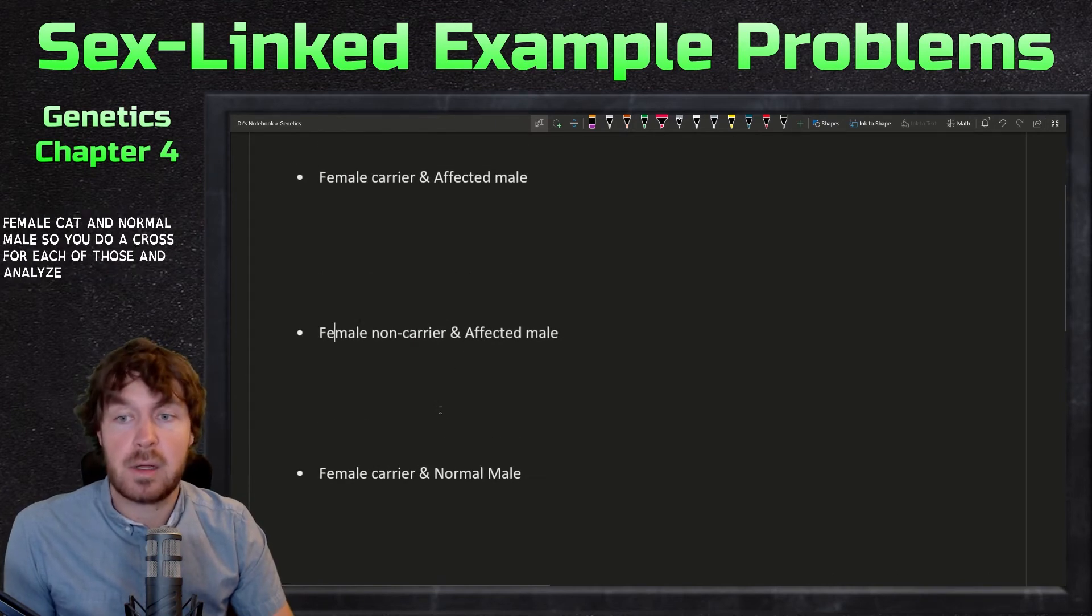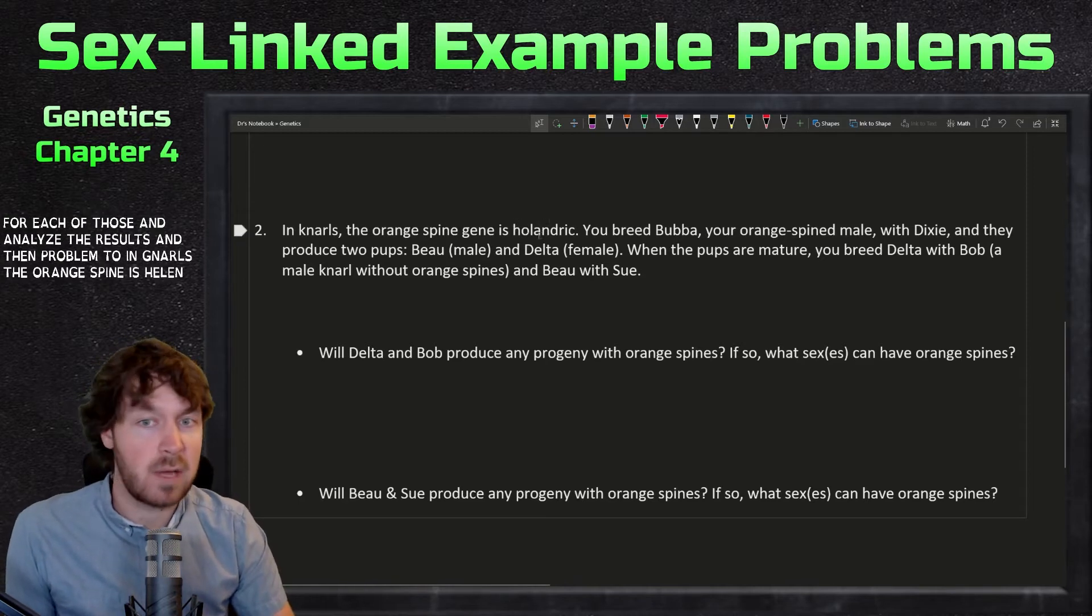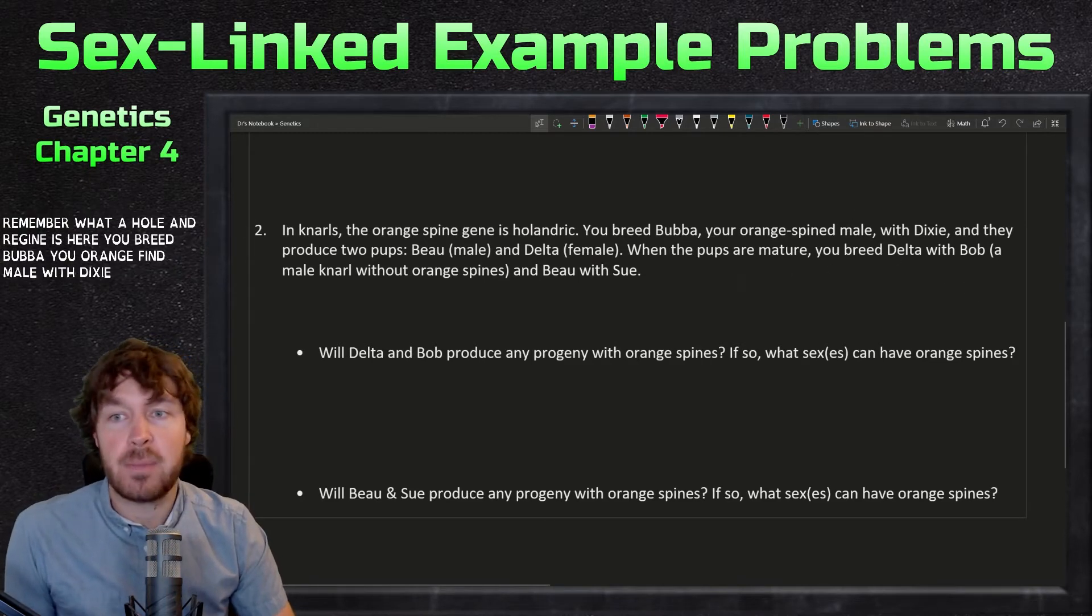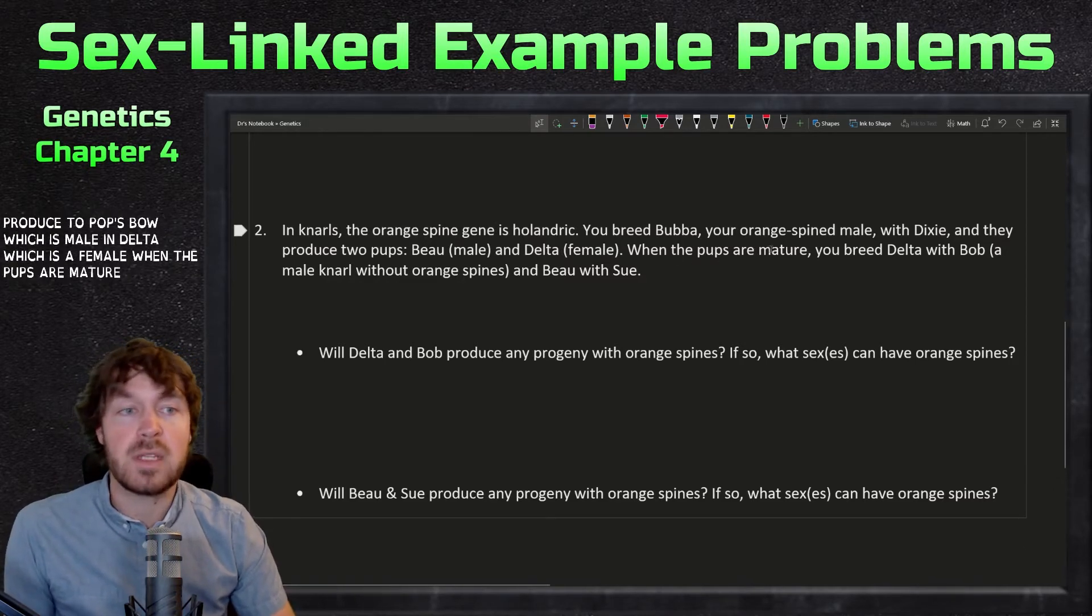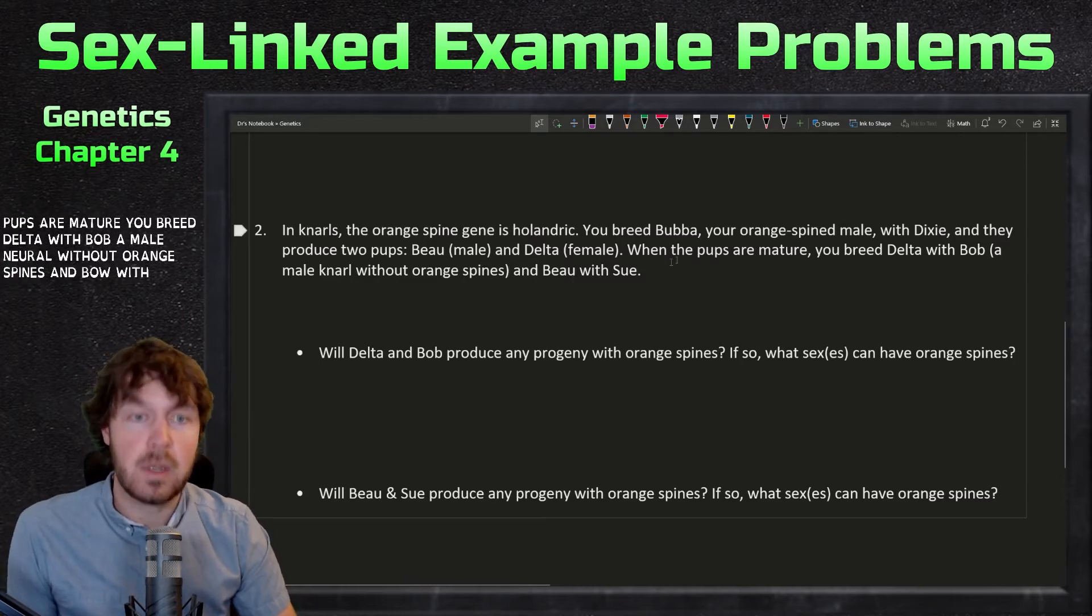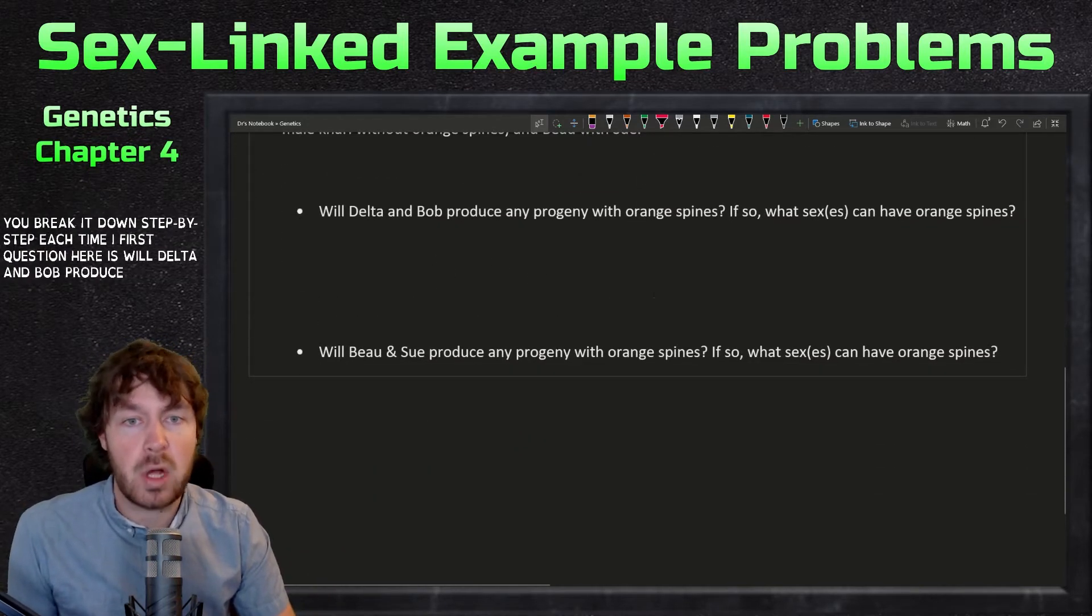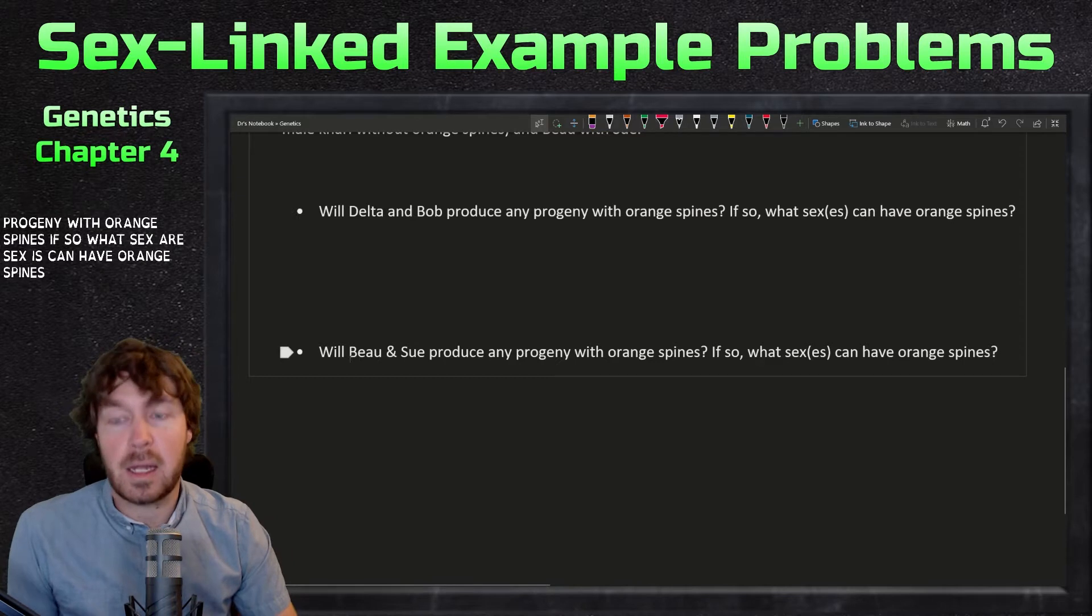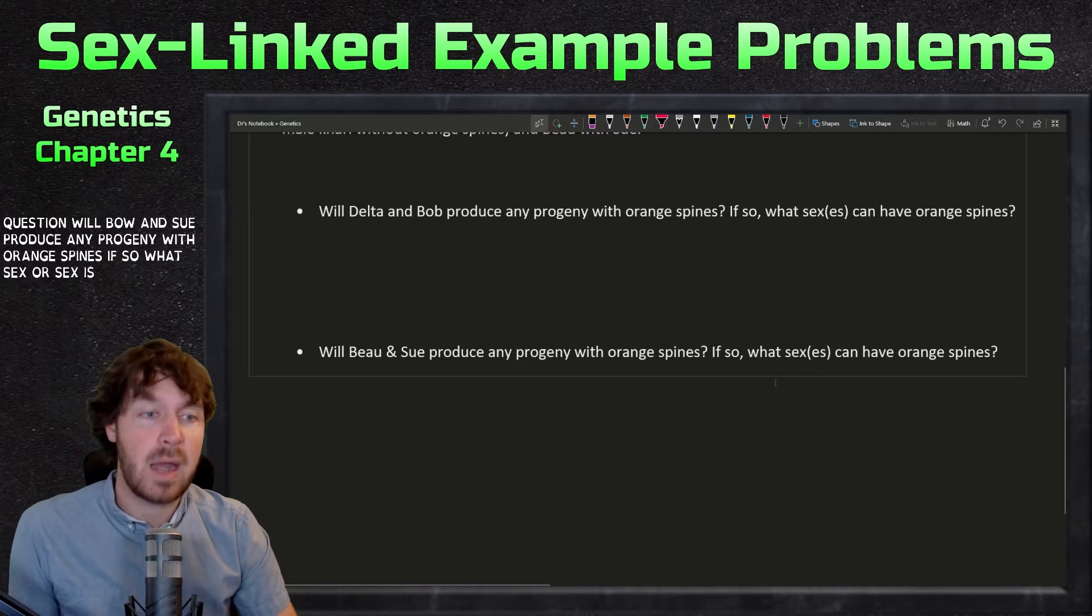Problem two: in gnarls, the orange spine is holandric, so you have to remember what a holandric gene is here. You breed Bubba, your orange-spined male, with Dixie, and they produce two pups, Bo which is male, and Delta which is a female. When the pups are mature, you breed Delta with Bob, a male gnarl without orange spines, and Bo with Sue. First question: will Delta and Bob produce any progeny with orange spines? If so, what sex or sexes can have orange spines? Last question: will Bo and Sue produce any progeny with orange spines? If so, what sex or sexes can have orange spines?